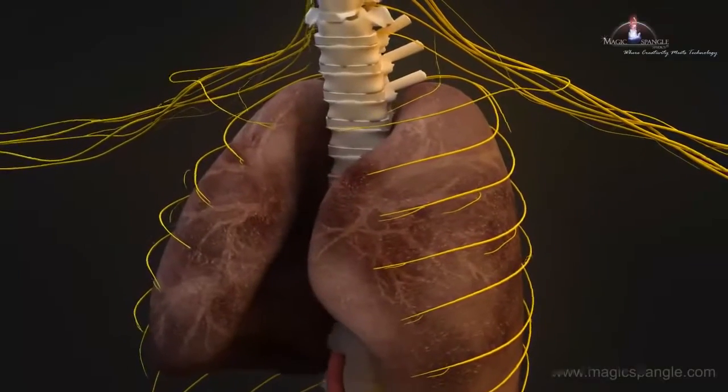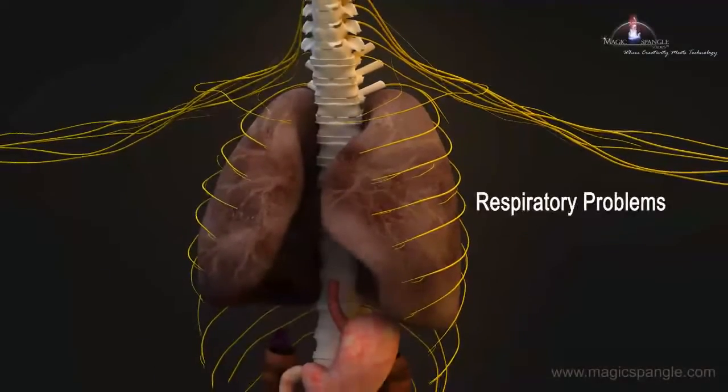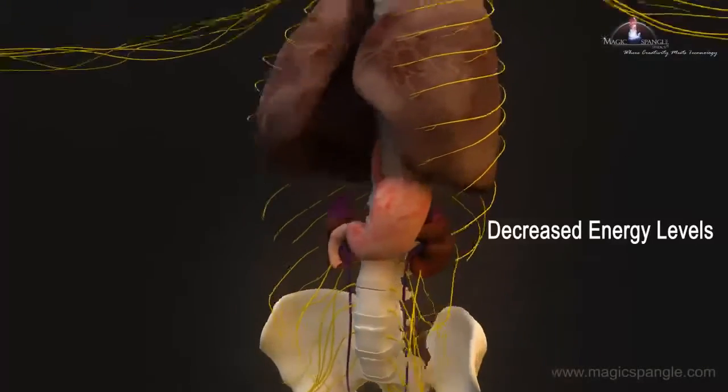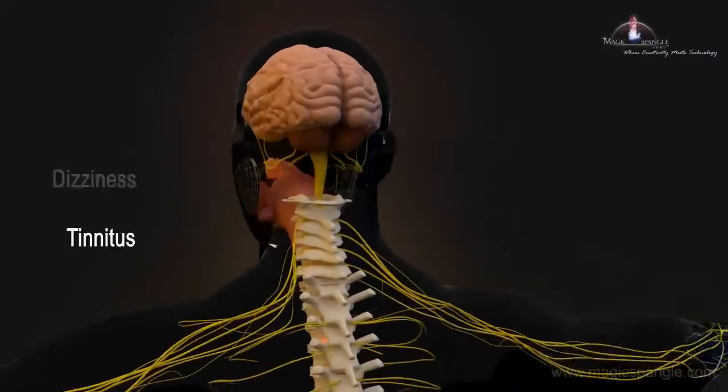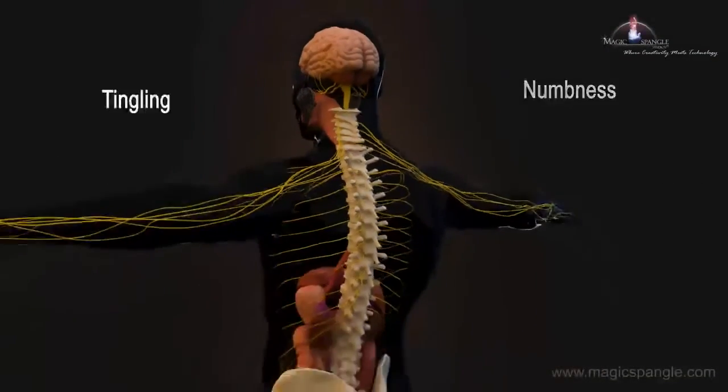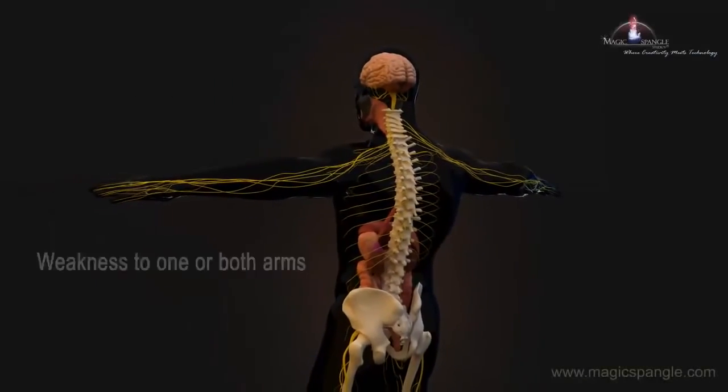A subluxation in your upper back can cause respiratory problems, digestive problems, and decreased energy levels. And subluxations in your neck can cause headaches, dizziness, tinnitus, carpal tunnel syndrome, numbness, tingling, and weakness to one or both of your arms.